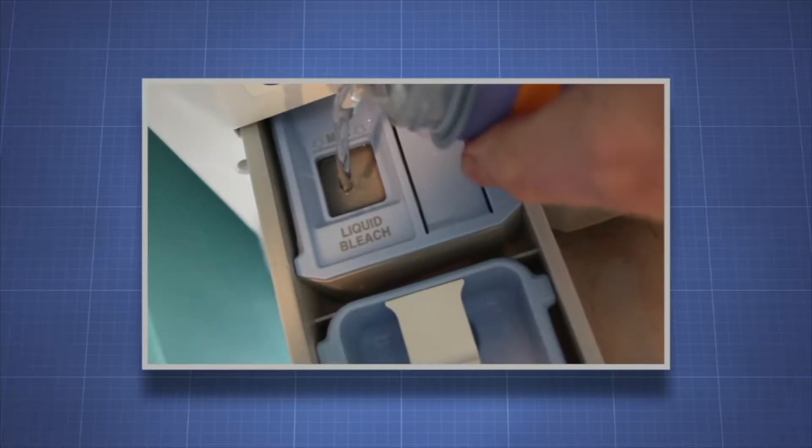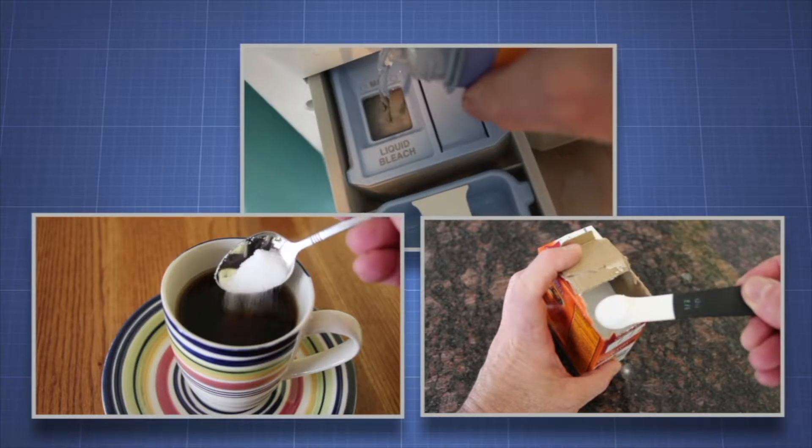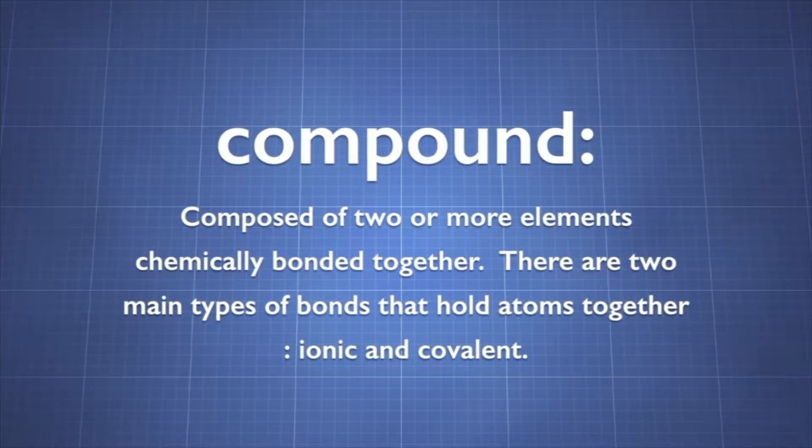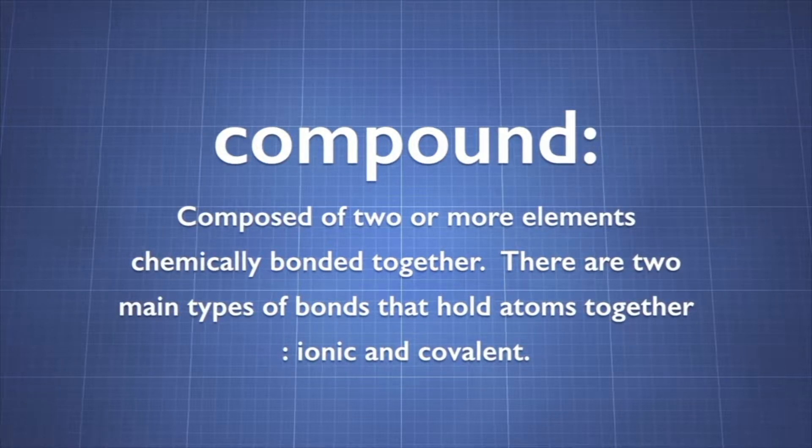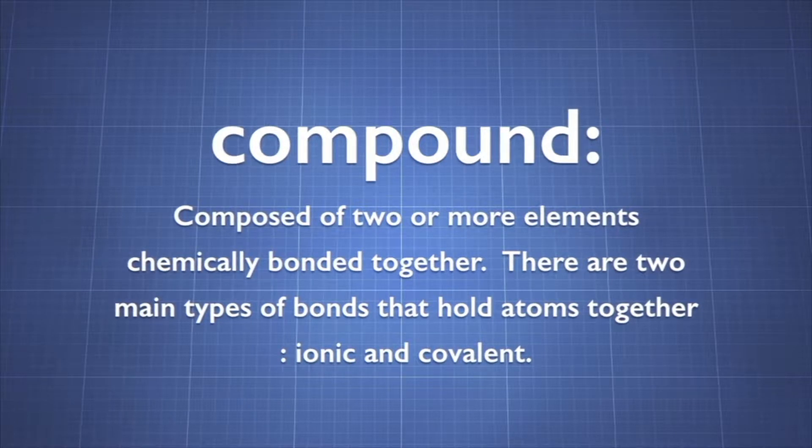Sugar, liquid bleach, and baking soda. These are common household products. Each of these is a chemical compound. A compound is composed of two or more elements that are chemically bonded together. There are two types of bonds that hold atoms together, ionic and covalent.